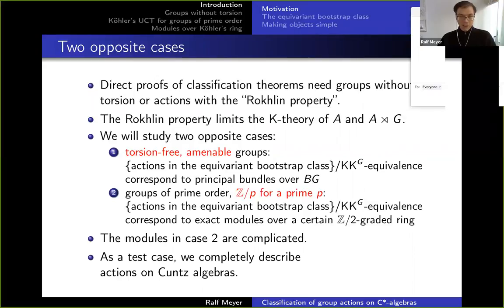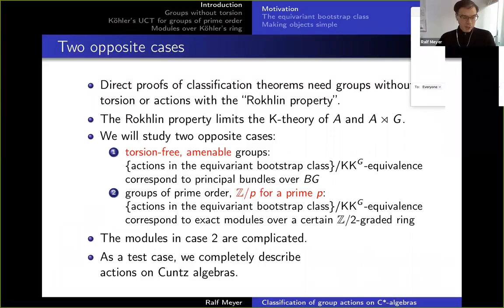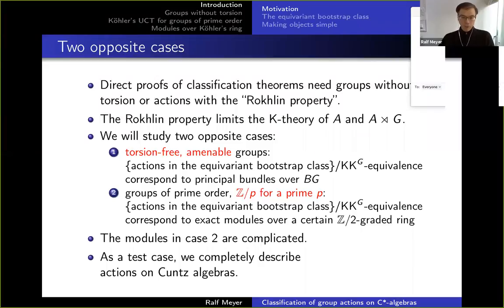There is some kind of dichotomy. If you look at direct proofs of classification theorems, you either assume your groups to have no torsion or you assume the actions to have special properties like the Rokhlin property. The Rokhlin property limits the K-theory of your algebra and the crossed product, so there are results like if you have an action with the Rokhlin property then something happens with the K-theory automatically — meaning you cannot cover all actions with these results.